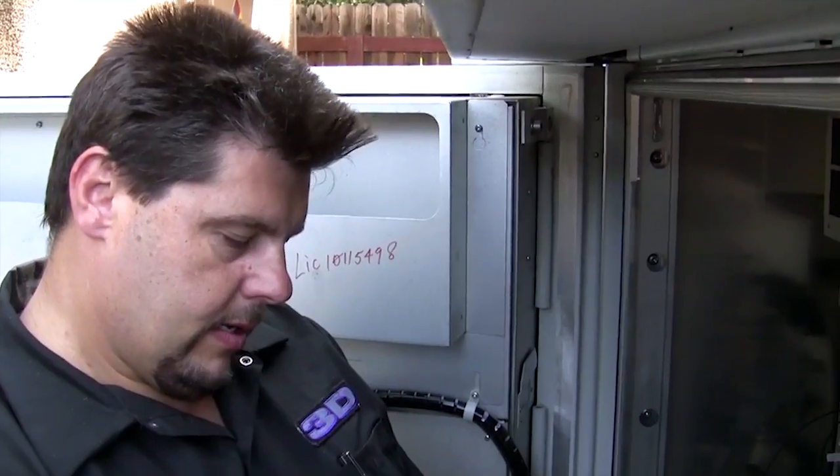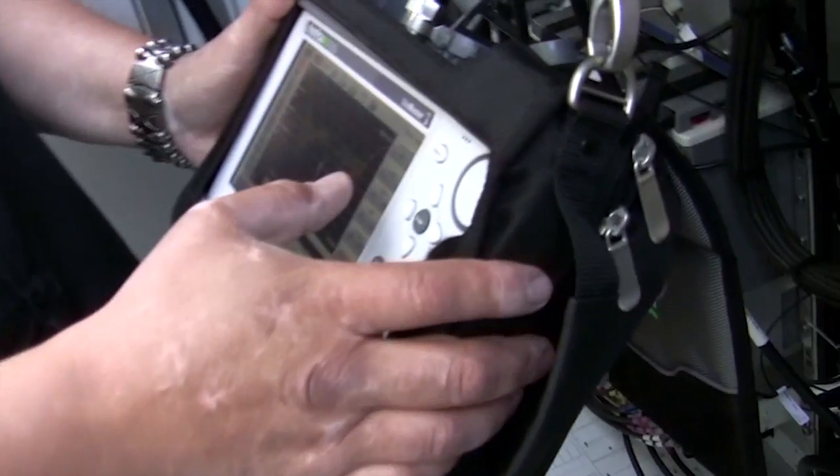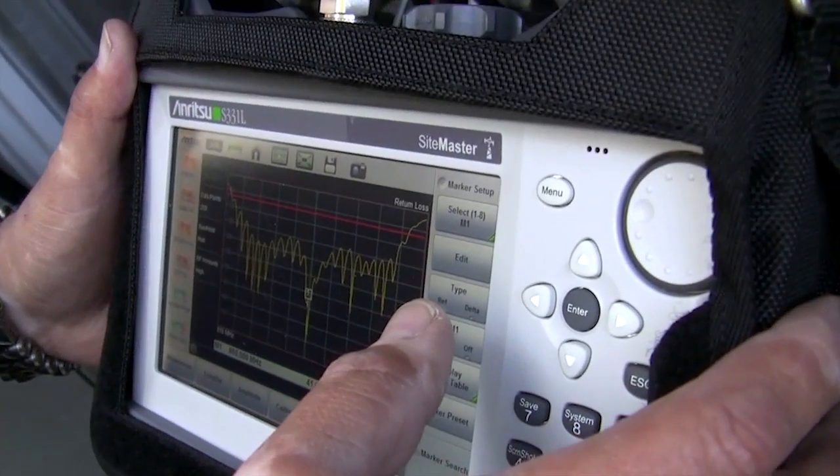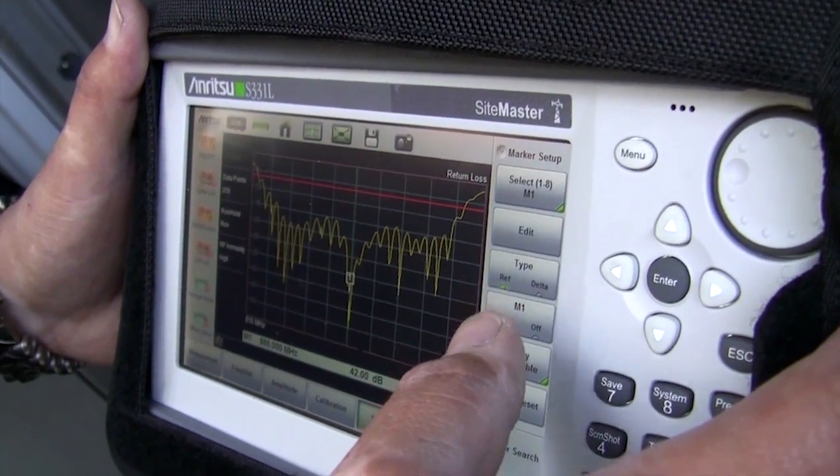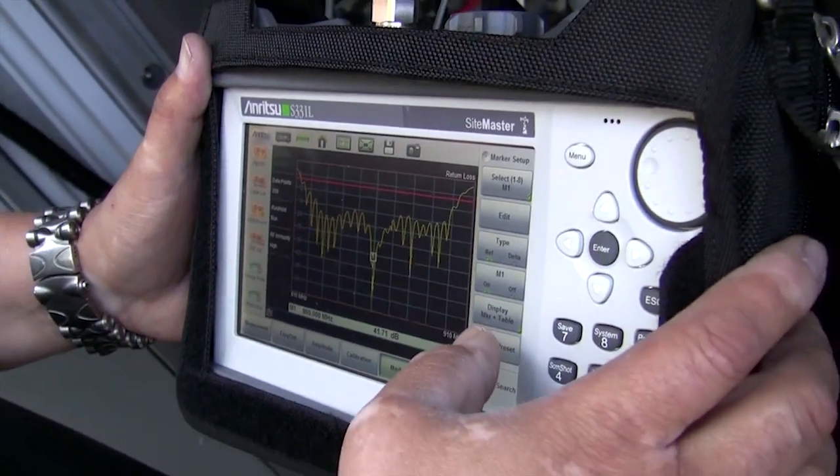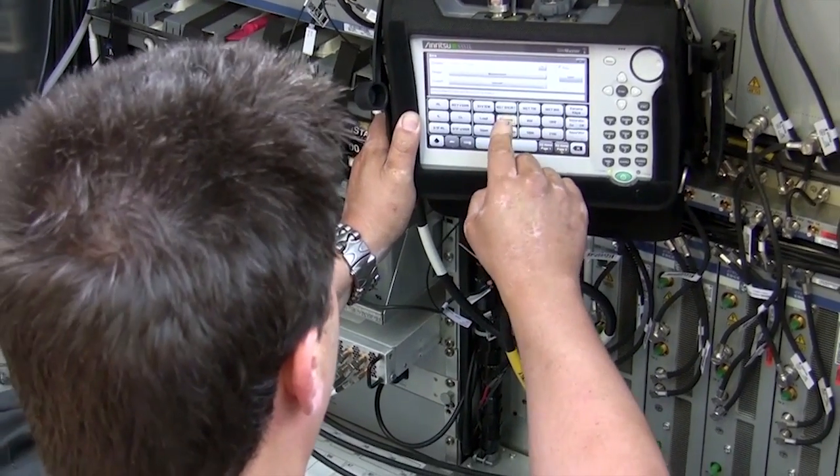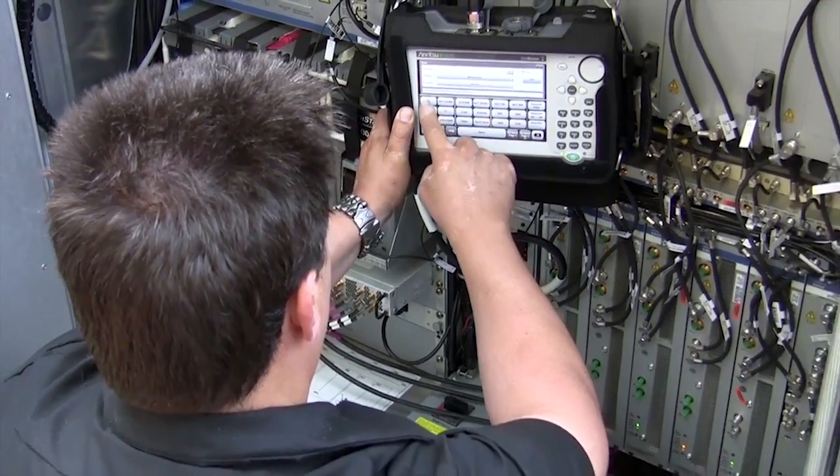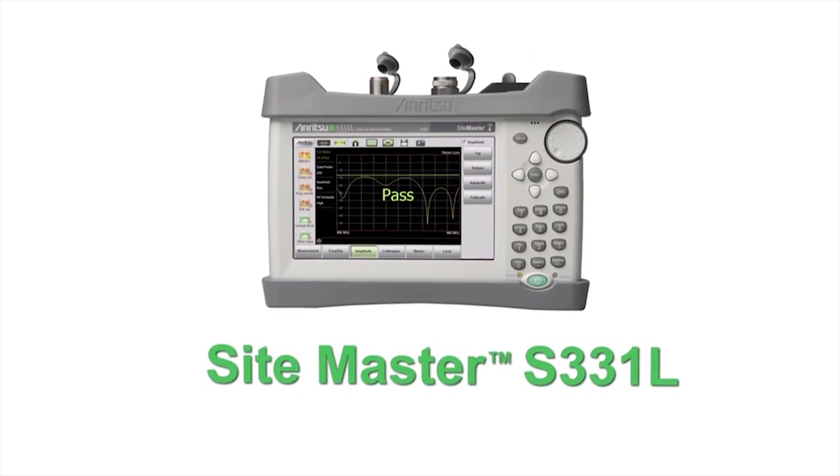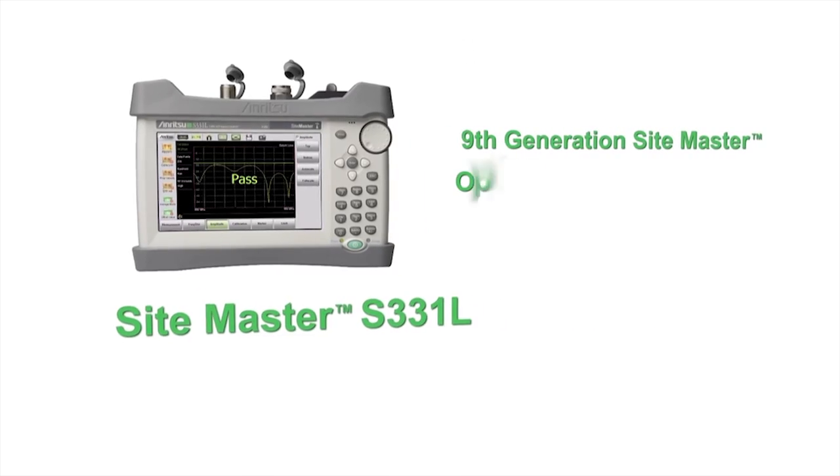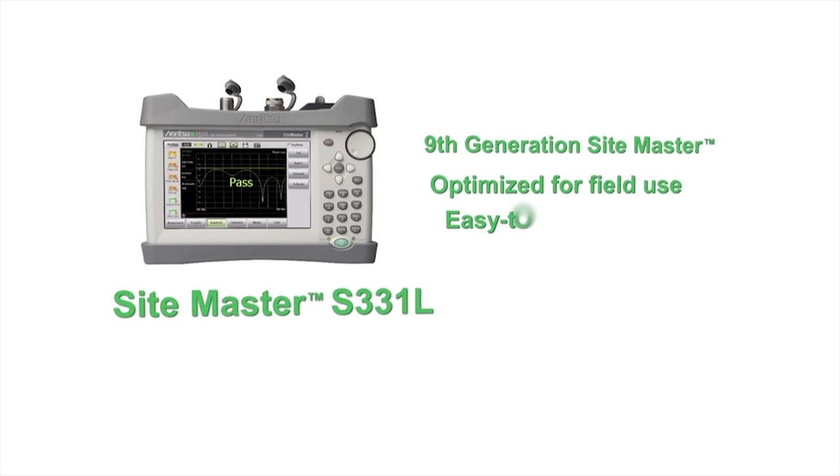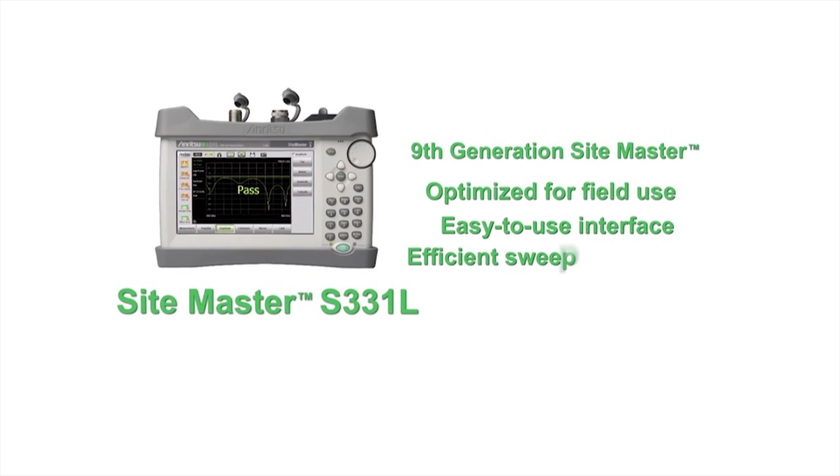Contractors, installers, maintainers and wireless service providers will enjoy its easy-to-use, all-inclusive architecture. With standard built-in Instacal and power meter, classic and advanced modes and the longest running battery time, there is no incorrect configuration. The S331L is optimized for field use with an easy-to-use interface and efficient sweep management.